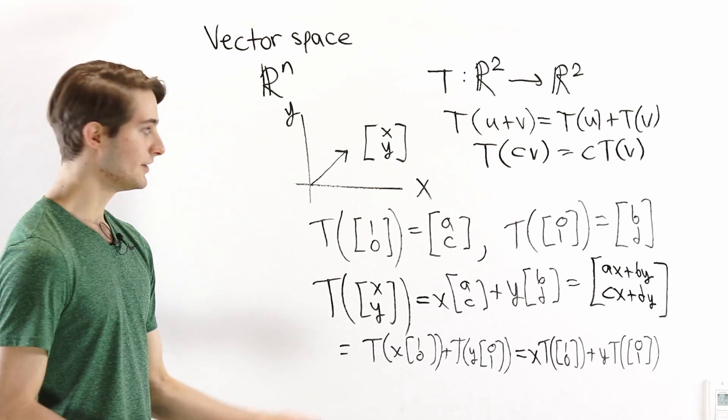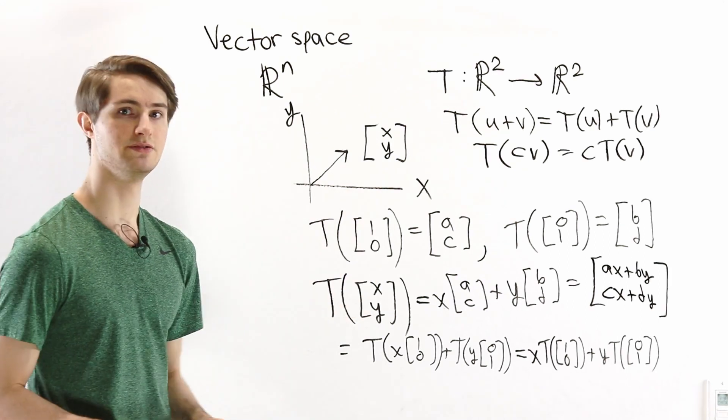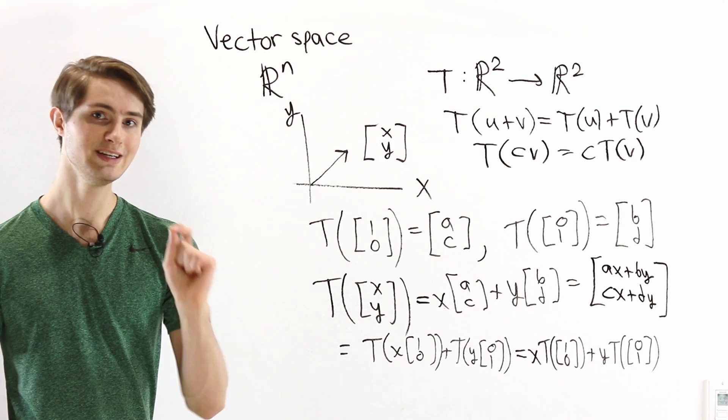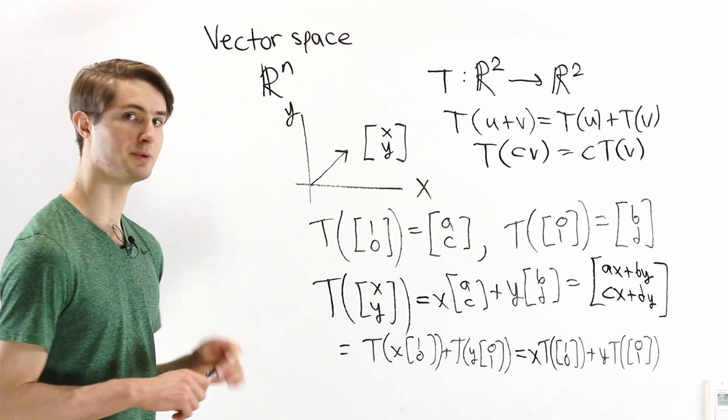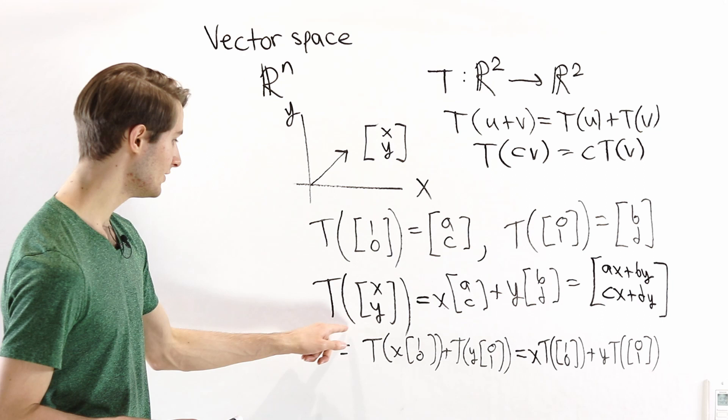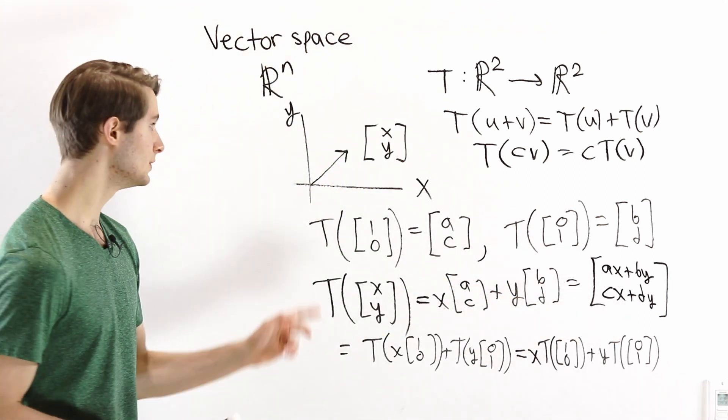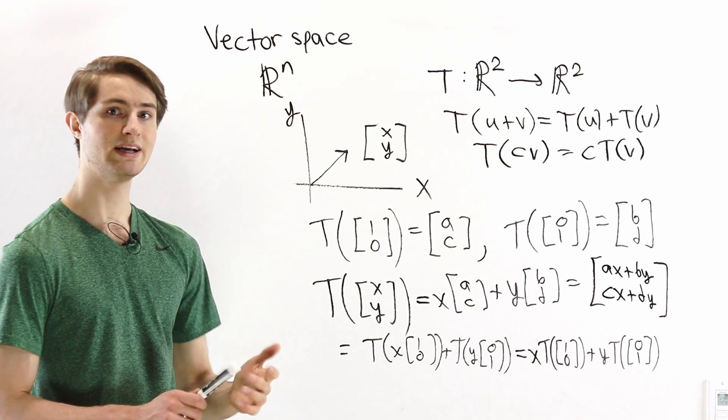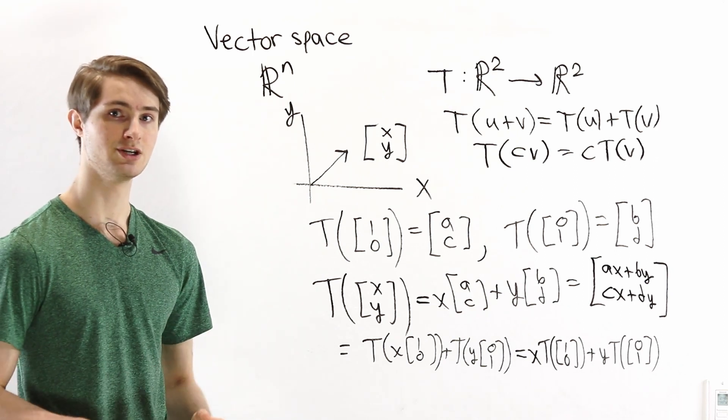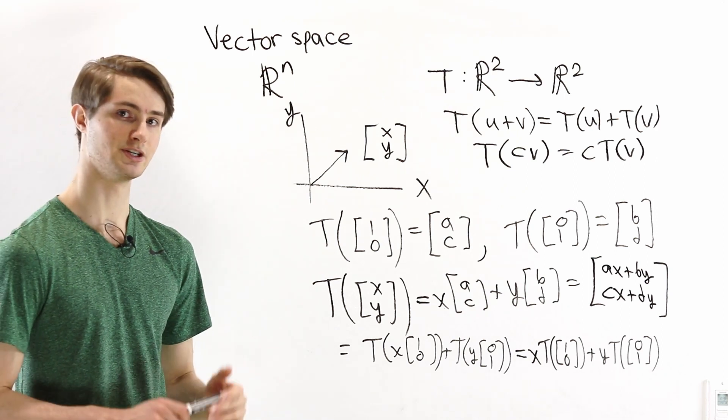All I did is tell you T of 1, 0 and T of 0, 1. By using only that, only that little piece of information about our function, we can tell you the output for any vector x, y, anything we want in our 2D plane. And that's why linear transformations are such a powerful type of function to study.